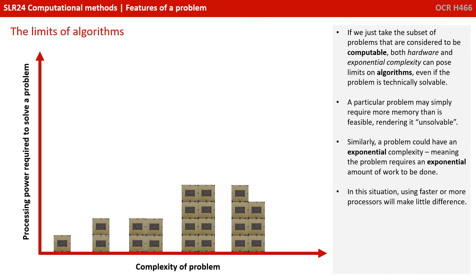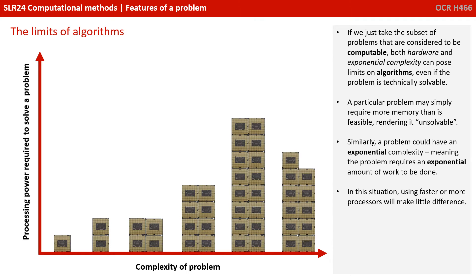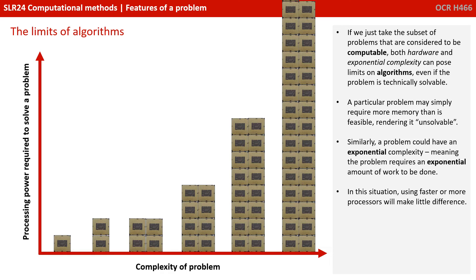In a similar way, a problem could have exponential complexity, meaning that problems require an exponential amount of work to be done. In this situation, throwing faster or more processors at the situation will make little difference. The blue arrow here shows that just because we're doubling the number of processing hardware, the actual improvement is negligible.